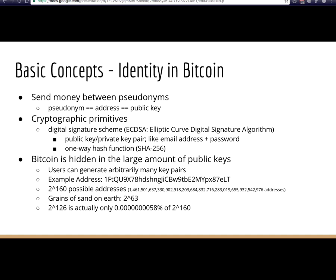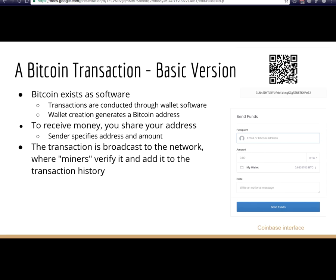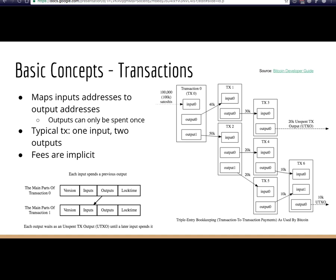Bitcoin exists as software. Whenever you create a wallet, it generates a public-private key pair which also becomes your address. Here's the Coinbase receive-money screen — when you press receive, it just shows the QR code for your Bitcoin address. When you send money, you specify an address and an amount. Once you press send, the transaction is broadcast to the network where miners verify and add it to the transaction history.